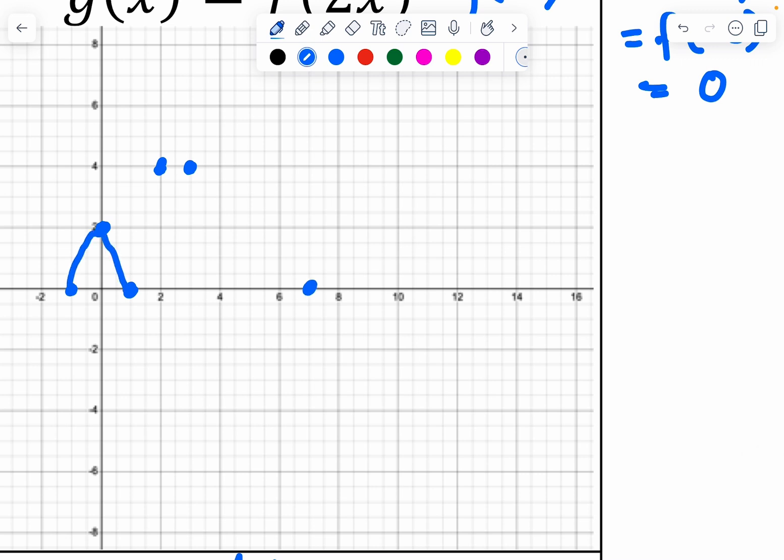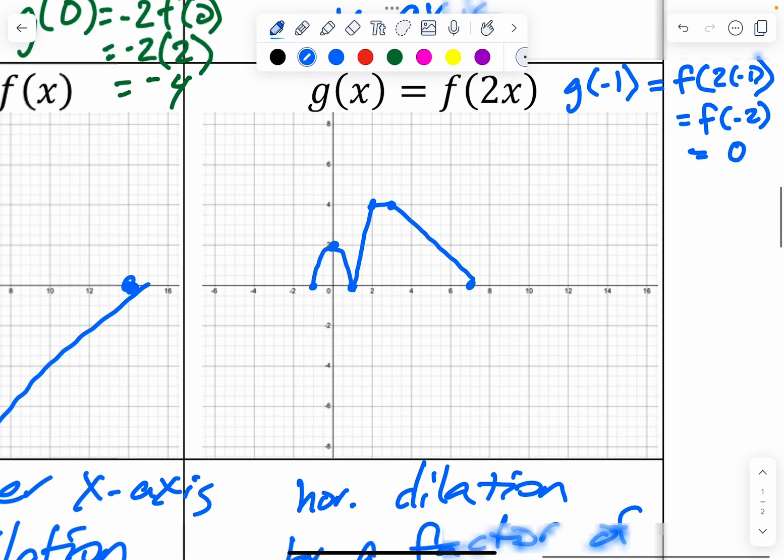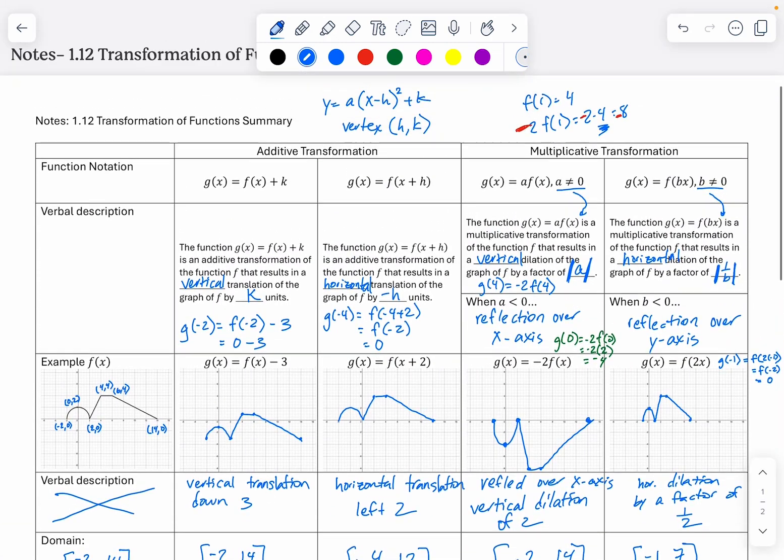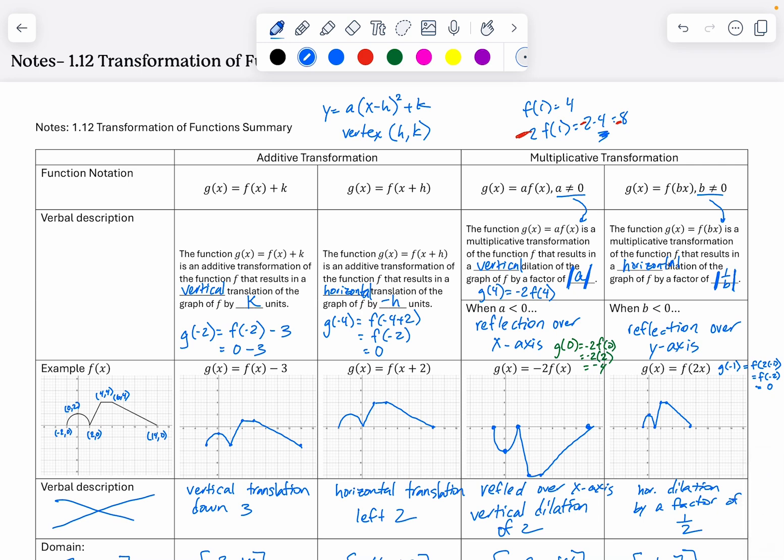My domain is now negative 1 to 7. But it did not change my range, which is still 0 to 4. So hopefully that was mostly a review for you. I think probably the only thing that's not a review would be some of the language that they use. But I think we should be good. All right. Well, like, subscribe, comment, do all the things, and go practice. Good luck to you.